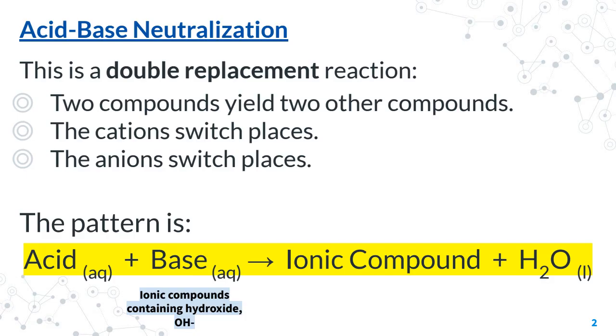So in an acid-base neutralization, know that this is, strictly speaking, a double replacement reaction. In a double replacement reaction, two compounds as reactants will yield two other compounds. The cations, those typically metal ions, will switch locations. The typically non-metal anions, which could be polyatomic ions, also switch places.